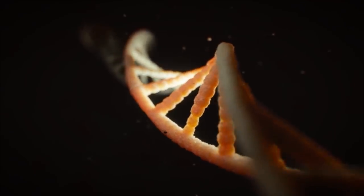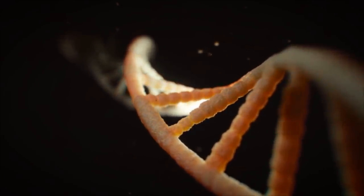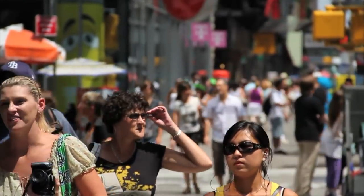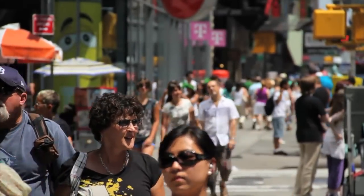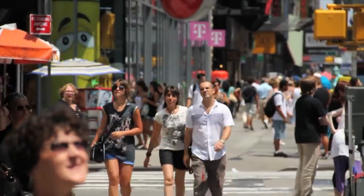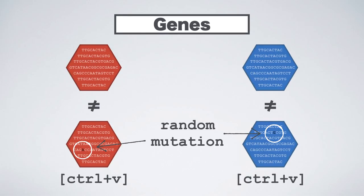Each gene consists of an average of 150,000 base pairs — the basic DNA building blocks. Copying each of them in the right order for each of your 20,000 genes is hard, so nature screws up here and there. Those mistakes are not aimed towards any goal; they're just mistakes. In biology, those mistakes are called random mutation.